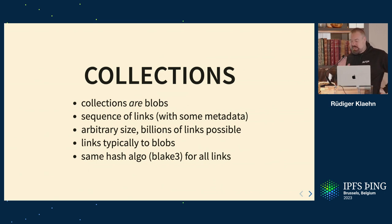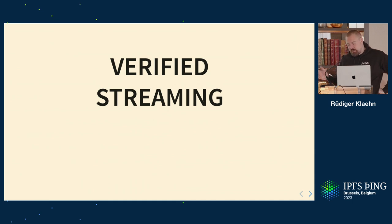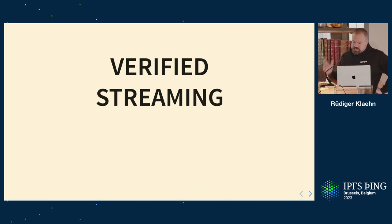We use the same hash algorithm for all links in the collection — this might be a bit controversial. Currently the only hash algorithm we support is Blake 3. And with these two primitives, we basically just want one thing: verified streaming.